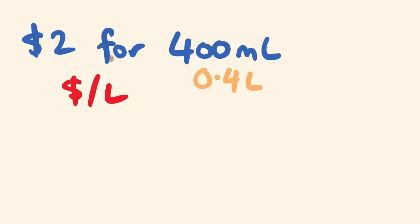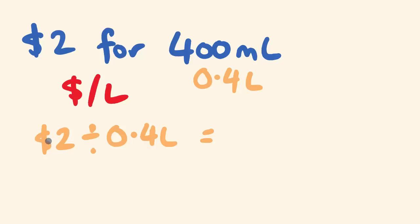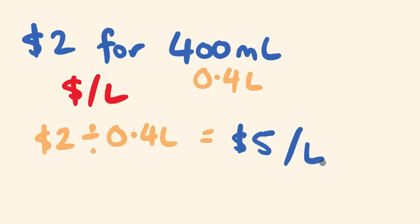Now we just chuck things in the formula. Dollars is $2, per always means divide, the number of litres is 0.4 litres. So 2 divided by 0.4 — there are five lots of it — this is $5 per litre. That's all we've got in this video. Hopefully that helped you out and helped you find that nice and easy. We'll see you next time. Bye.